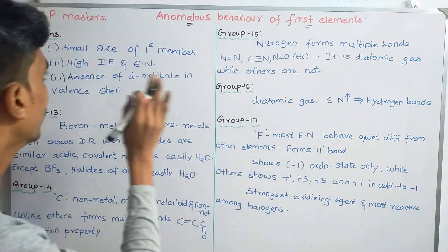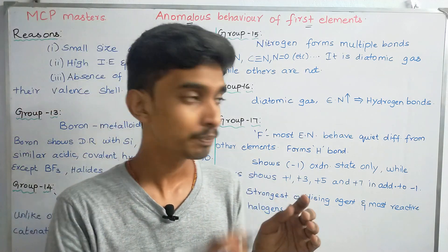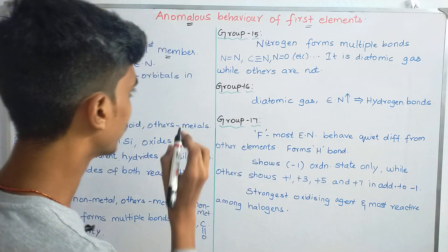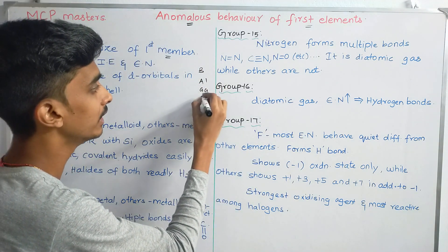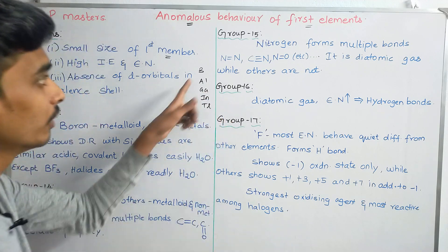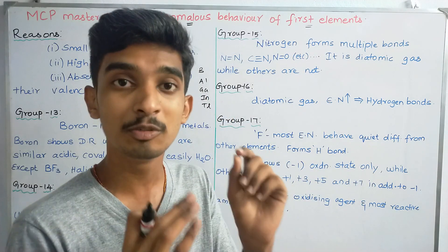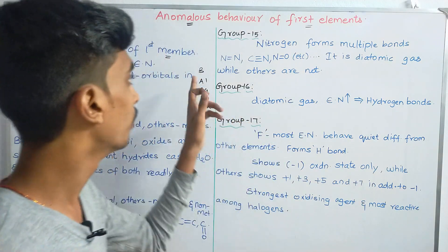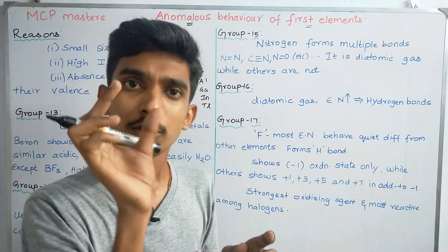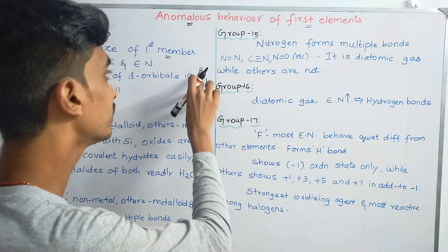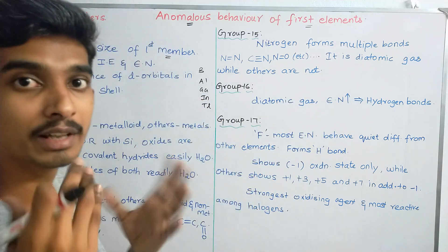The first reason is the small size of the first member. For example, in Group 13, the elements are Boron, Aluminum, Gallium, Thallium. Boron has atomic number 5, so its size is very small. Because it is so small, it behaves differently from the rest of the group.